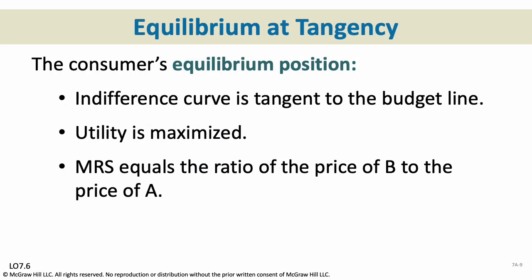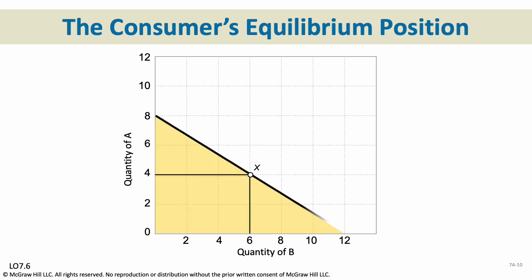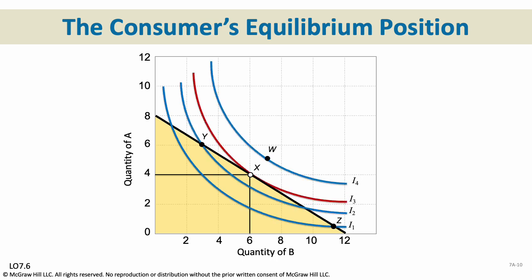To find a consumer's equilibrium, the indifference curve is going to be tangent to the budget line, and where it is tangent to the budget line is where utility is maximized. The MRS will equal the ratio of the price of B to the price of A. Looking at the indifference map with the budget line, the equilibrium position is at point X, where the slope of the budget line and the slope of the curve are equal. At quantity 4A and 6B, this is the maximum utility for this consumer.